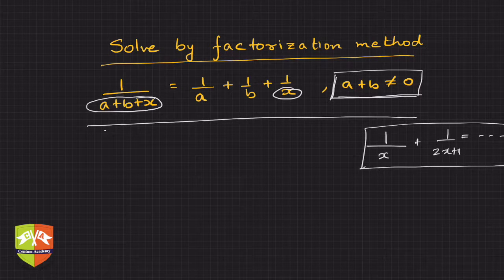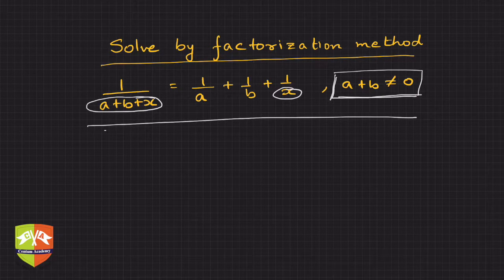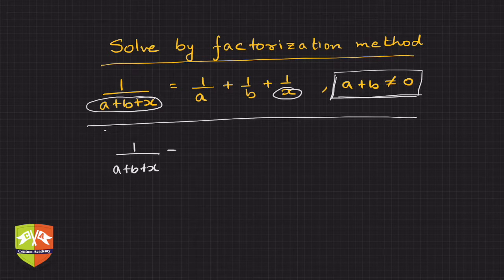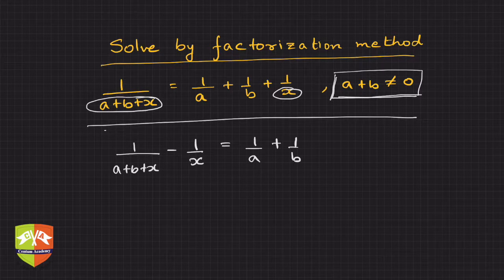The first step is to get all the variable terms on one side of the equation. Take one upon x to the left hand side: you get one upon (a + b + x) minus one upon x on the left, and this equals one upon a plus one upon b on the right.